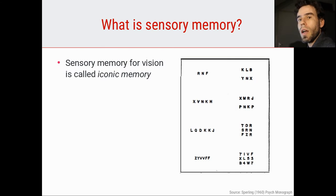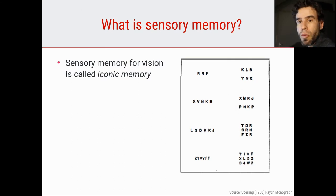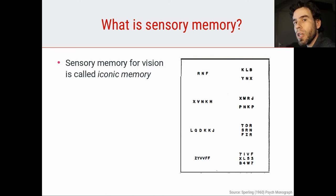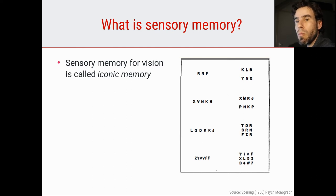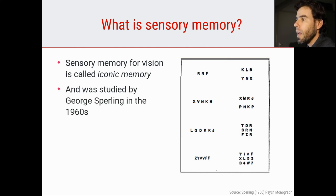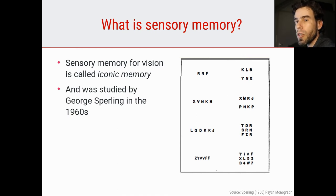When you talk about sensory memory in the context of vision — visual sensory memory — we generally use the term iconic memory. Iconic memory is by far the most studied form of sensory memory, and the name George Sperling is especially important here, because he did a lot of research on iconic memory in the 1960s.